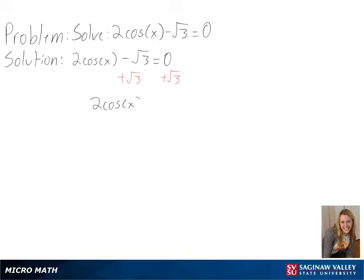We can do this by first adding the square root of 3 to both sides, and then dividing both sides by 2. And we will get cosine of x equals the square root of 3 over 2.